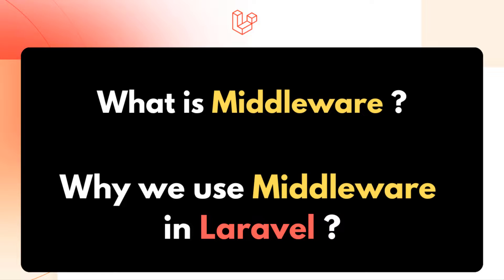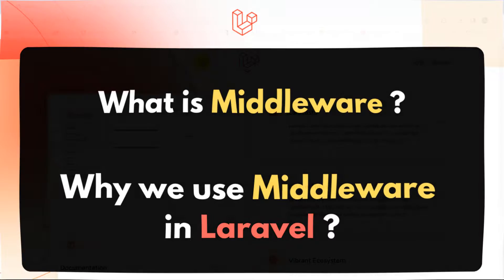Hello everyone, this is Yavin and in this tutorial I am going to talk about Middleware and how we can use Middleware in your Laravel project. We use Middleware in order to protect a certain page. For example, we have two users — a regular user and an admin — and we have a page where we only want the admin to have access. We can also use Middleware for age checks: if the user's age is below 18, we will not let that user access that certain page.